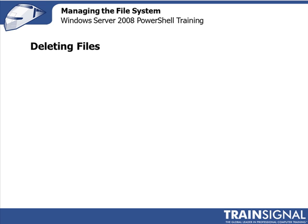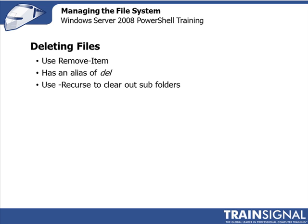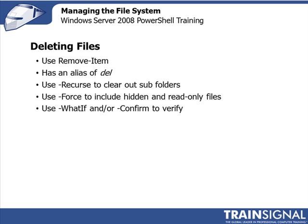By now I hope you're getting the picture that this really isn't too much different than what we've been doing in the CMD world. To delete files, we're going to use Remove-Item or take advantage of the alias del. This cmdlet has a -Recurse parameter, so if you want to clear out all subfolders as well, that's what you'd be looking for. There is also -Force — if you have hidden or read-only files and want to make sure those are also deleted, you can use any combination of these parameters. You'll definitely want to look at help when you're deleting, and test to make sure you fully understand how this cmdlet works. Take advantage of -WhatIf and/or -Confirm parameters so you can verify that you are deleting what you expect to be deleting.